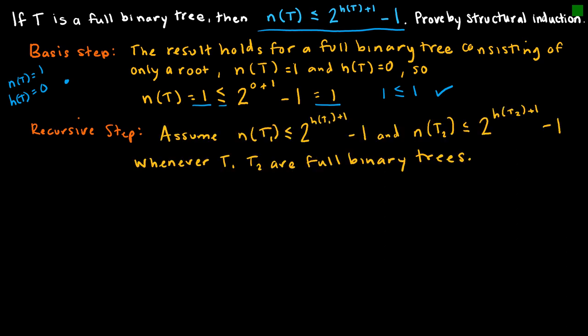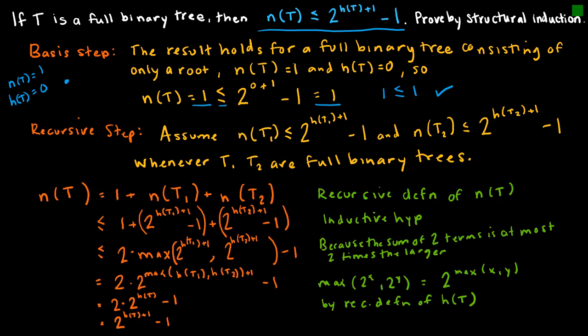The recursive step states the inductive hypothesis: we assume the inequality N(T) ≤ 2^(H(T)+1) − 1 is true for T1 and T2 whenever those are full binary trees. Now I have to do the actual proof using that assumption.